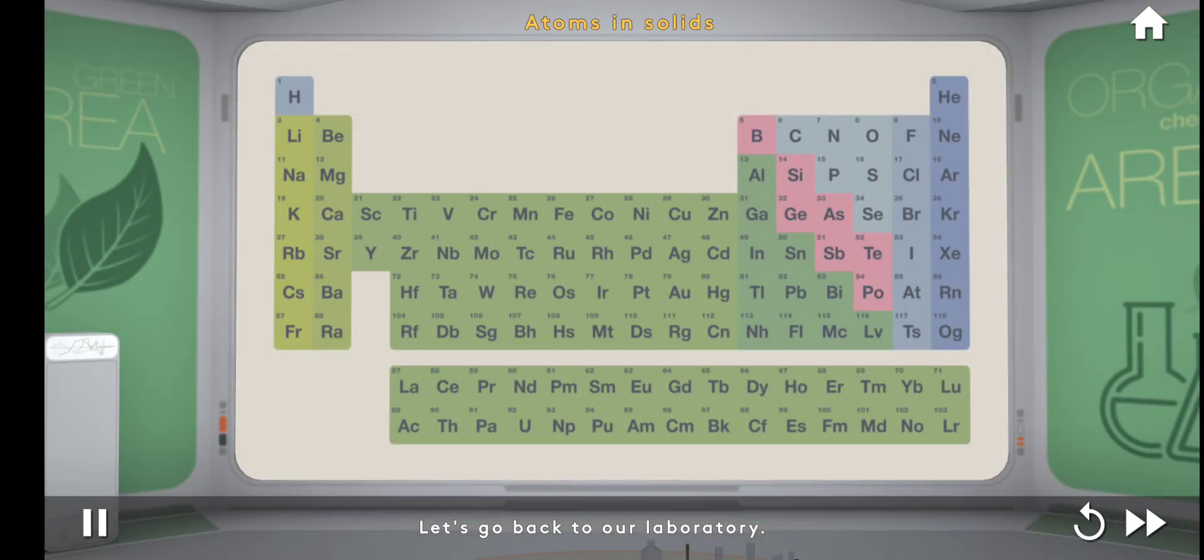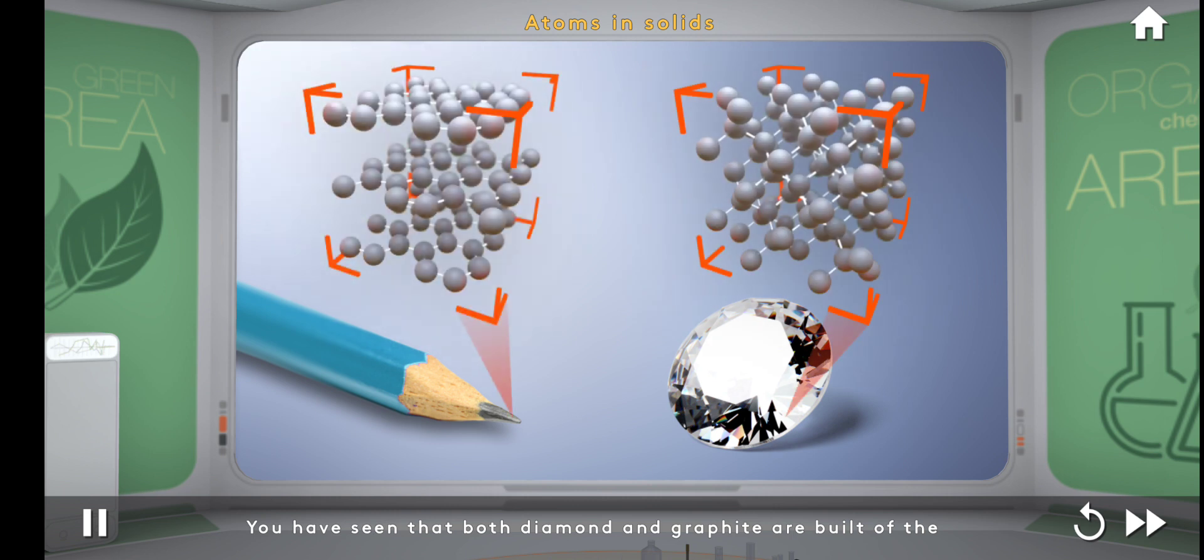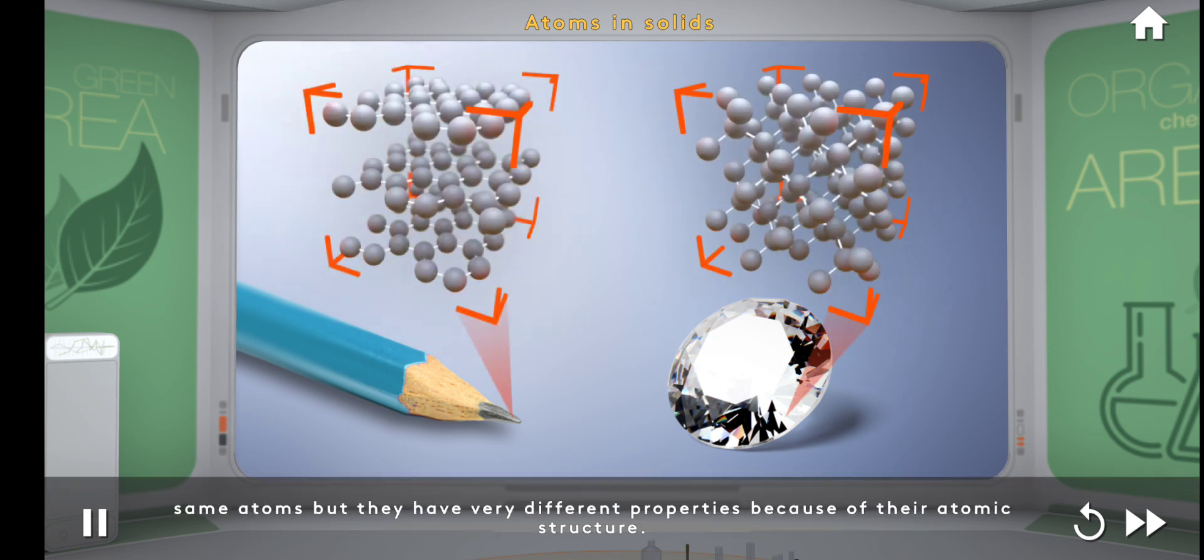Let's go back to our laboratory. You have seen that both diamond and graphite are built of the same atoms, but they have very different properties because of their atomic structure.